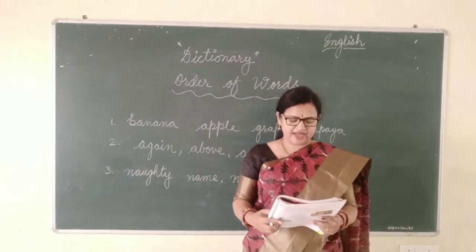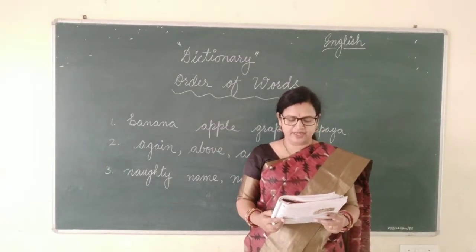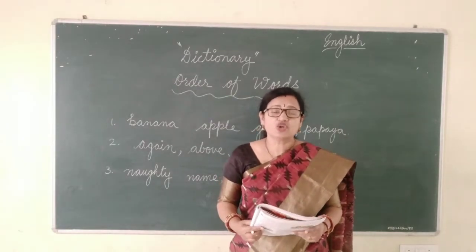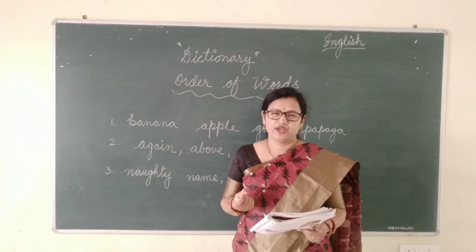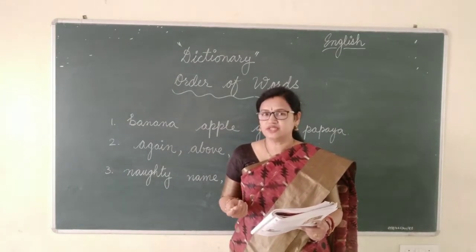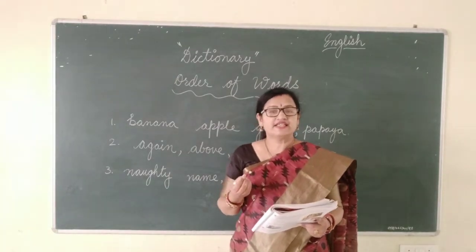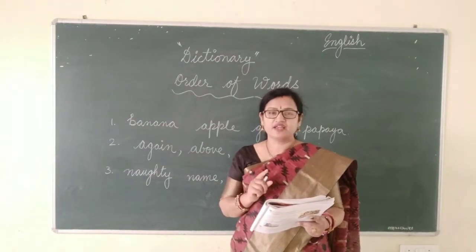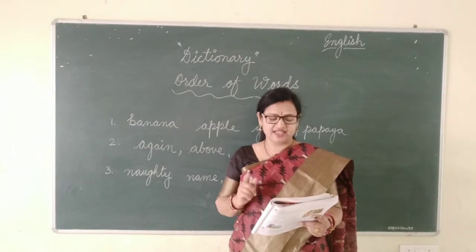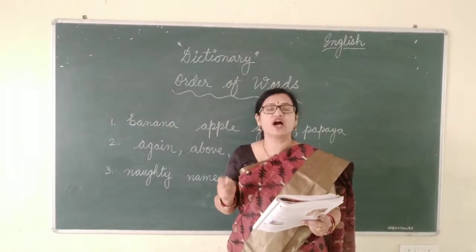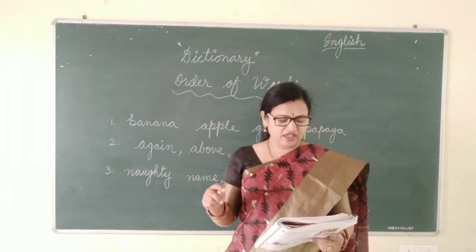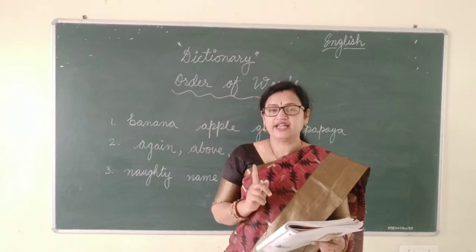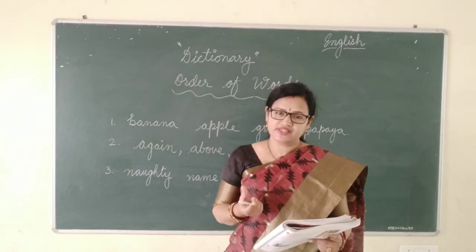For example: able, action, admire, airplane, afraid, again, ahead, and aim. These all words start with A. So how will you search in the dictionary? We will look at the second letter. The second letters are B, C, D, E, F, G, H, I — in alphabetical order. So which word comes first? We will see which word comes first by the second letter of the word.